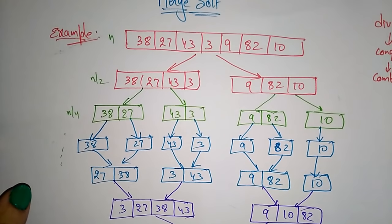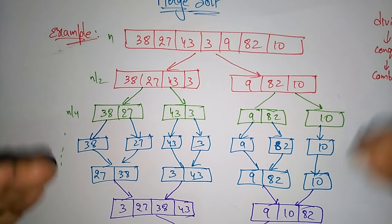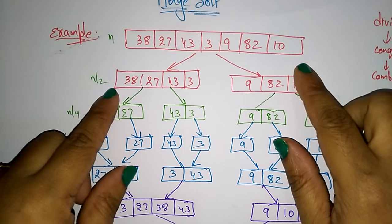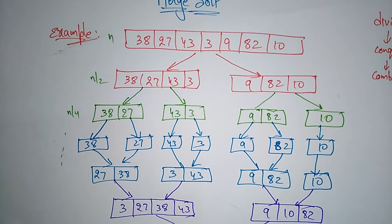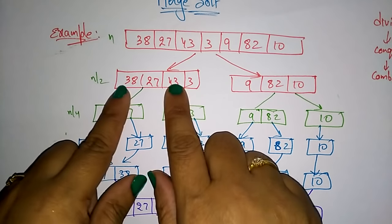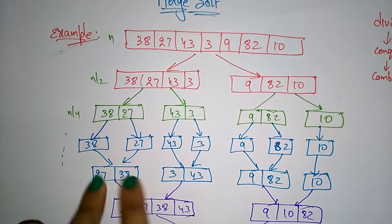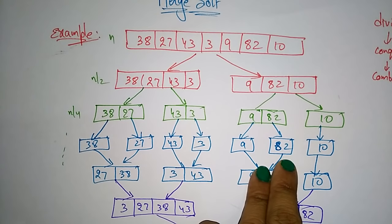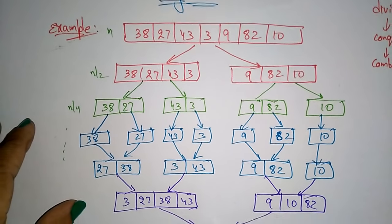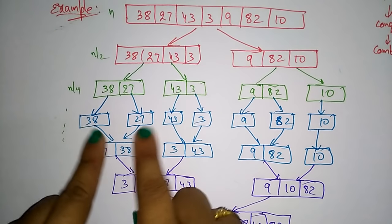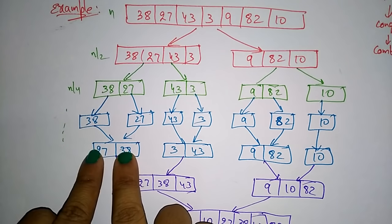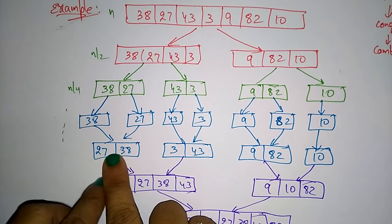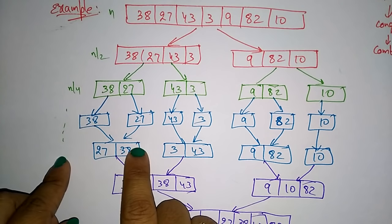So this is how you do merge sort: take an unsorted array and divide the array by taking the middle element and dividing it into sub-arrays, until you reach size 1. After that you merge the arrays, taking two at a time, and while merging you sort the array.